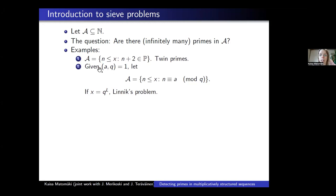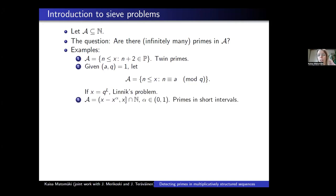As a second example, we can take coprime integers a and q and take A to be the set of integers up to x such that n is a mod q, and ask if there are primes that are a mod q. By Dirichlet's theorem there are infinitely many primes p which are a mod q. But if we take x to be not too big compared to q — in particular, if x equals q to the L for some constant L — this is called the Linnik problem, because Linnik was the first to show there exists a constant L such that there is a prime p which is a mod q of size at most q to the L.